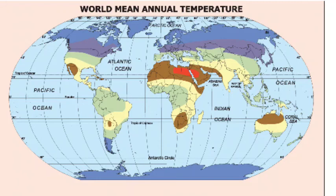Which ocean separates Asia and North America? Atlantic Ocean. Which latitude passes through India? Observe clearly — 23 and a half degrees north latitude. Understand. Which latitude passes through Australia? 23 and a half degrees south latitude. Understand.